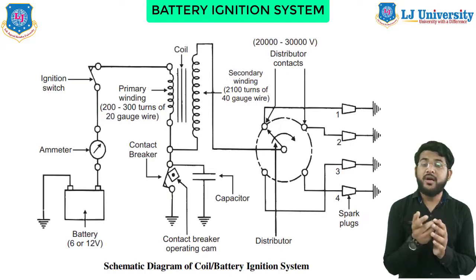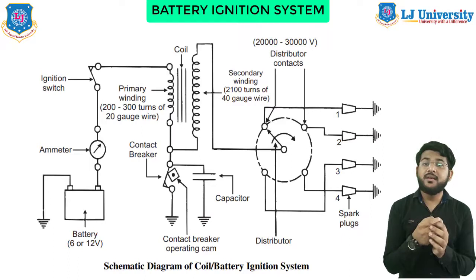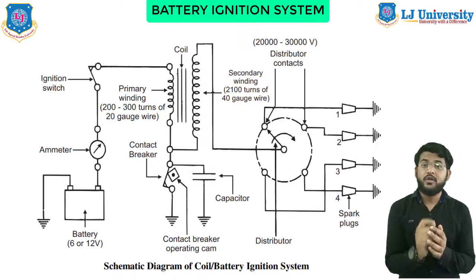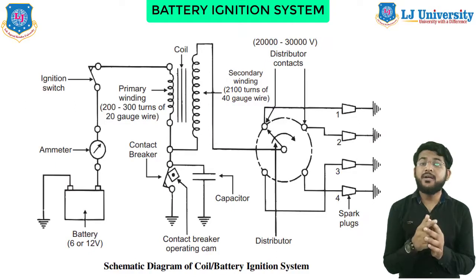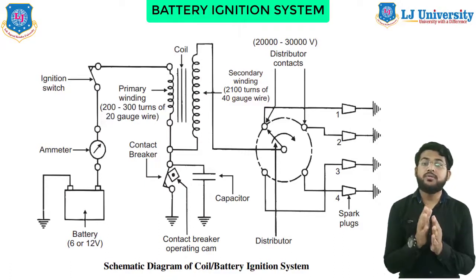Some important points to note: the function of the capacitor is to reduce arcing at the contact breaker points, which connect very frequently. When the contact breaker opens and the magnetic field in the primary winding begins to collapse, the capacitor gets fully charged and then starts discharging, helping in building up the voltage in the secondary winding. Also, the contact breaker cam and distributor rotor are mounted on the same shaft — in two-stroke engines they rotate at engine speed, and in four-stroke engines at half the engine speed.